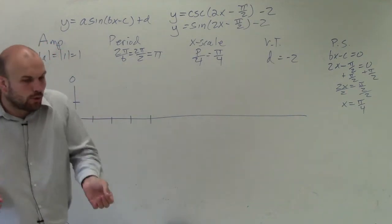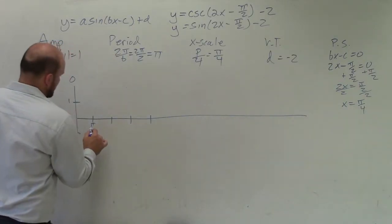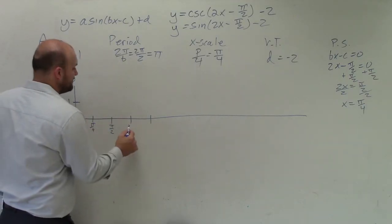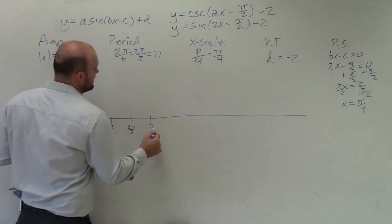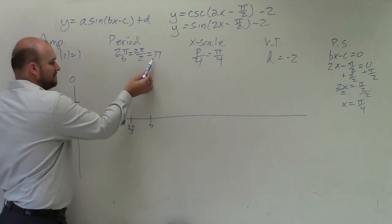Remember, there's four important points that create the period. So if this is pi over 4, add pi over 4 again, that's pi halves. Add pi over 4 again, that's 3 pi over 4. And then add pi again, that would be pi. You can see that 4 x scales make up my period.